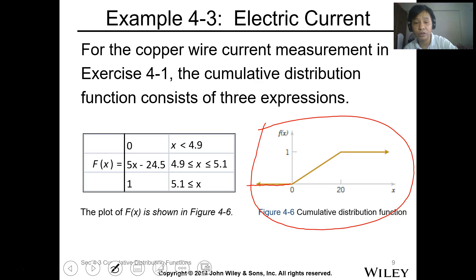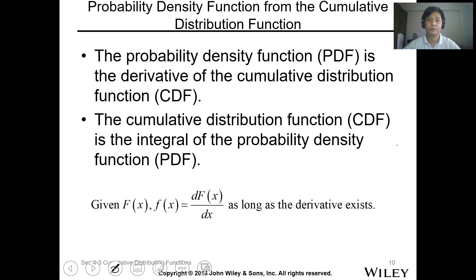When the value is between, dali dapat ito ay 4.9 at saka ito ay 5.1. So the value pag 4.9 pa baba, 0. Pag 4.9 to 5.1, it will follow this linear function which is 5X minus 24.5. And beyond 5.1 that value will be equal to 1.